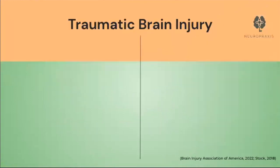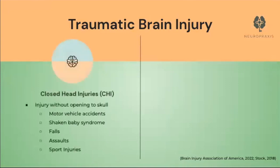Now we'll go over what a traumatic brain injury entails. There are two types of TBI, known as closed and open head injuries. Closed head injuries are trauma to the brain without causing an opening to the skull. They are common in whiplash-type injuries caused by car accidents, motorcycle accidents, bicycle accidents, falls, blows to the head during a fight, and most commonly from concussions that occur in contact sports.